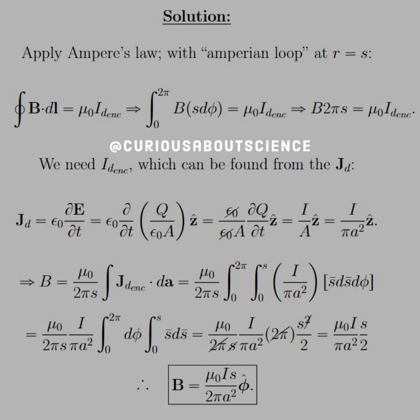And then we see here that after we evaluate the integral, we get a factor of 2 pi that cancels, the s from Ampere's law on the left-hand side cancels with one of the factors there. And you see we conclude down to B equals mu naught I s over 2 pi a squared in the phi hat direction.